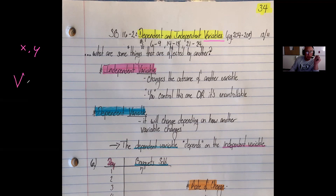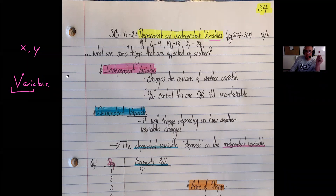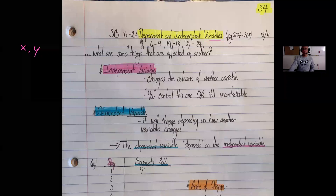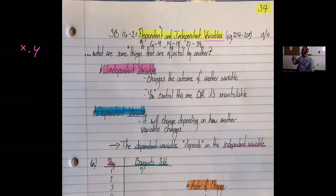When you look at the word variable, the prefix is the word 'vary,' which simply means to change or to be different. So a variable, ladies and gentlemen, is anything that can change or be different from person to person, situation to situation, car to car, school to school, time to time, et cetera. Anytime you have something that can be different from one thing to another, that is a form of a variable.